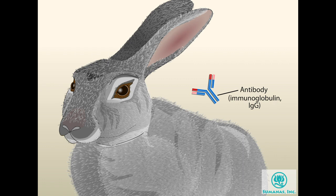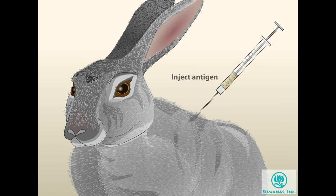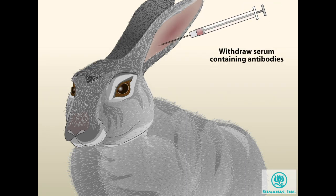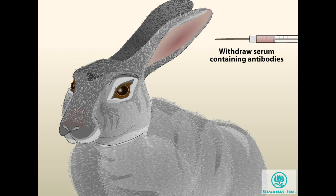For example, if an antigen from human cells is injected into a rabbit, the rabbit's immune system will produce specific antibodies against the antigen. The resulting rabbit antibodies can then be withdrawn, purified, and applied to human tissue specimens to identify the location of the antigen within a cell.